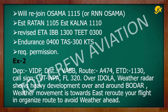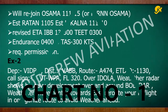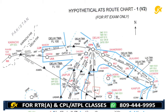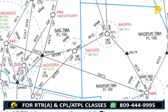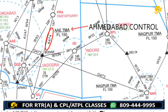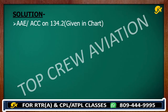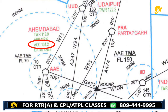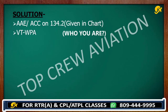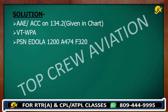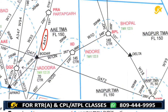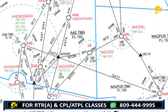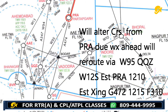A couple of students got this exact question in examination. For this, you will use chart number 1. As per the flight level on this route, your ATC would be Ahmedabad Control on 134.2 — check and use the exact frequency written on the chart. Who are you? Victor Tango Whiskey Papa Alpha. Position: Eidola, 1200. Route is Alpha 474, flight level 320. Will alter course from Pratapgarh at 1210.